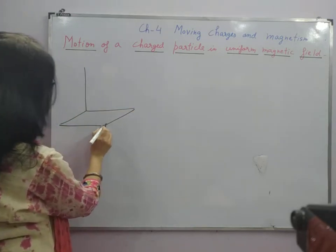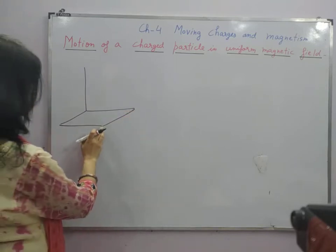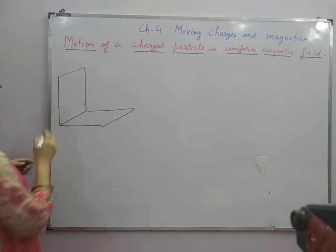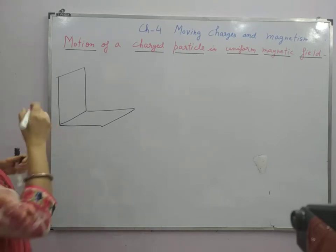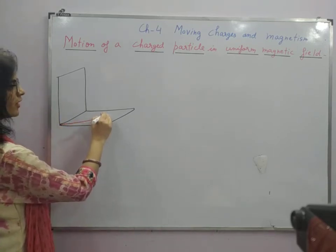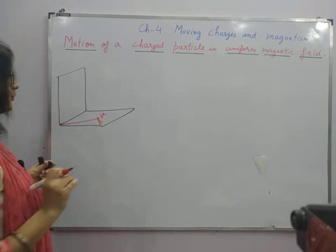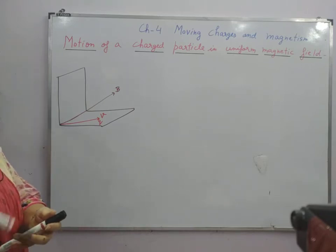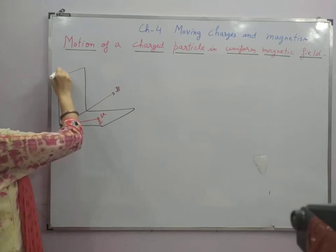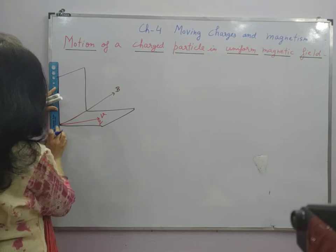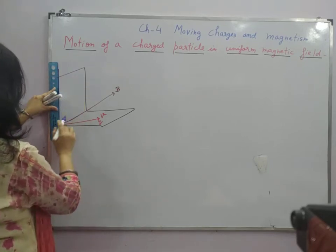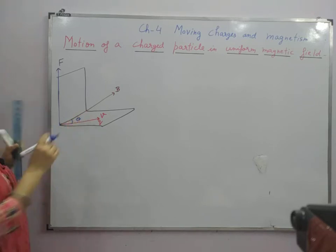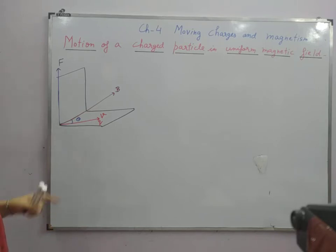This is the horizontal plane shown by the horizontal plane of the book, and here is the perpendicular plane where force is acting. This shows the direction of velocity of the charge particle Q, this is the magnetic field direction, and the direction of force is along this. Theta is the angle between the direction of motion of the charge and the magnetic field.